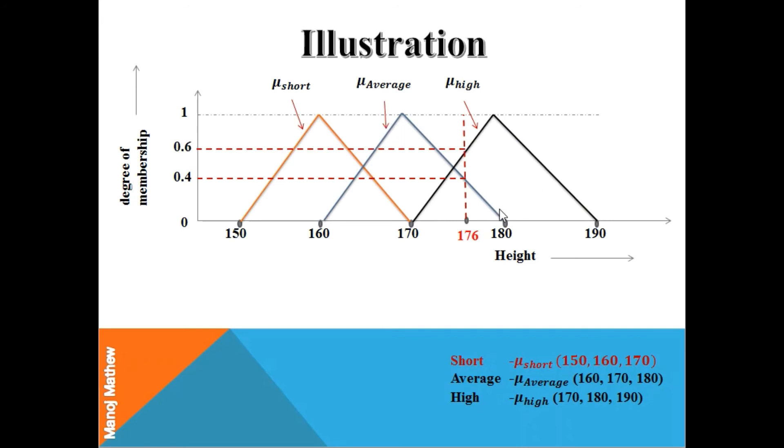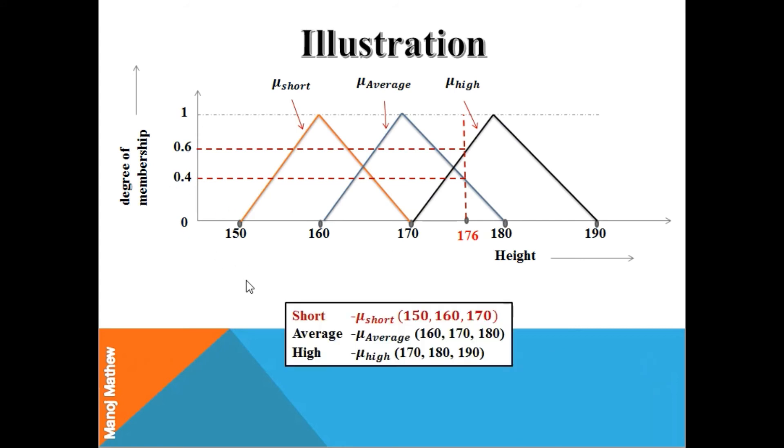Similarly, the vertical line from 176 intersects μ-high, that is the membership function of high, at 0.6 degree of membership, which when converted to percentage is 60%. So 176 is 60% high. In summary, 176 is 40% average and 60% high. This is the beauty of fuzzy that it is more flexible and caters to the fuzziness or vagueness in preference.